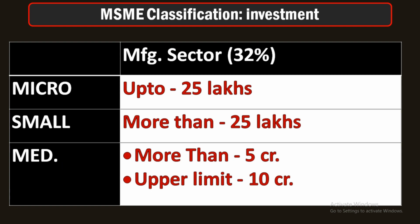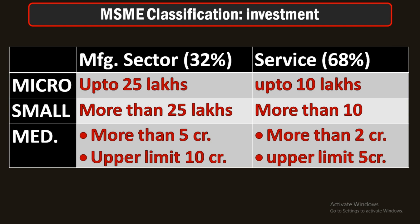These norms shown on screen are for manufacturing units. But not all industries are manufacturing — some produce services. For service-producing units, the classification is: up to 10 lakhs investment means micro enterprise; more than 10 lakhs means small enterprise; around 2 crore up to 5 crore means medium enterprise.